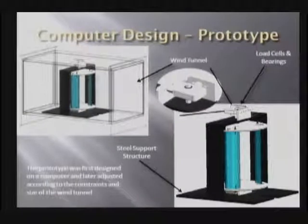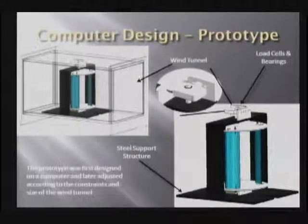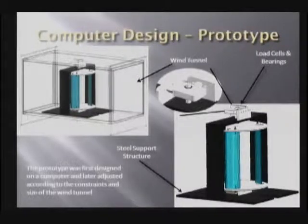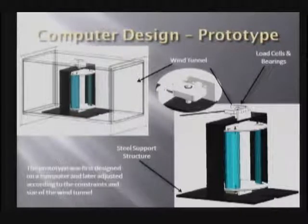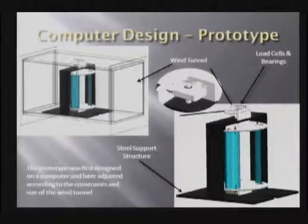The computer design of the prototype — as you can see in the top left and bottom right — used a fiberglass wind tunnel over at the AERB building in Hancock. You can see the steel support structure on the right, which was designed to harbor the load cells and the bearing, and can also be seen in a magnified view. The prototype was first designed on a computer and later adjusted according to the constraints and size of the wind tunnel.